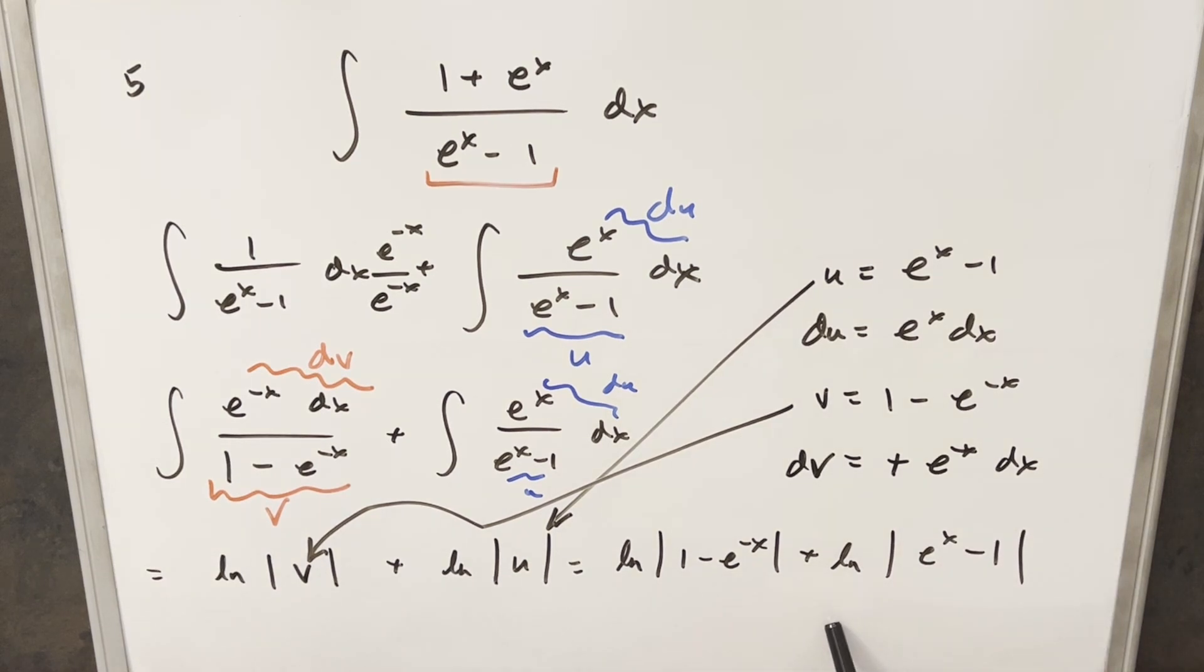And now we can just leave our solution this way. But I think what I'd rather do is use log properties. And what we can do is combine these two and multiply these together. I'm just going to need a little more space on the board.